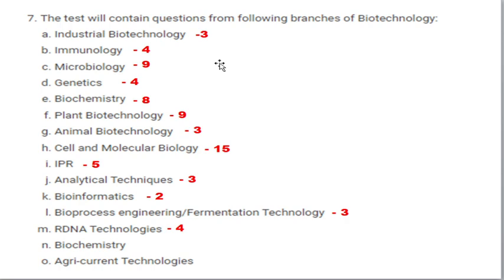In case you can't clear the Biotech Industrial Training Program, you can use your preparation for the Biotechnology Eligibility Test, for which the online application form opens in April or May. The key difference is that clearing the BITP allows you to start your career in the industry side, whereas the BET examination is equivalent to a CSIR examination — students who clear it can get into the research field and do their PhD by getting a fellowship.